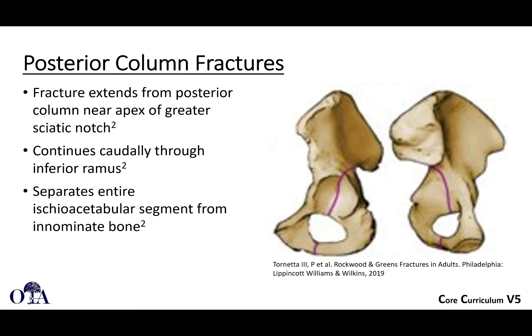Posterior column fractures are somewhat uncommon. The fracture extends from the posterior column usually near the apex of the greater sciatic notch. As opposed to anterior column fractures where fracture lines can go up the wing, posterior column fractures generally stay down near the greater sciatic notch. As with any column fracture, they fracture through the obturator ring — you see this fracture line come down through the ring — and this separates the entire ischioacetabular segment from the innominate bone.